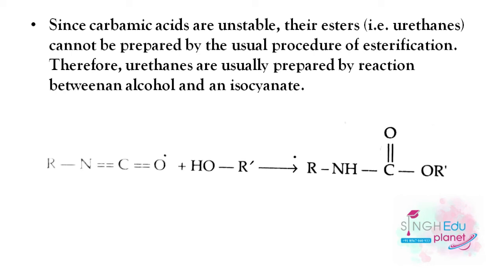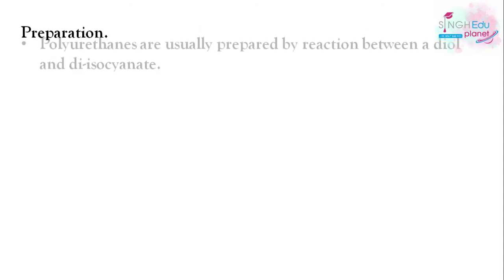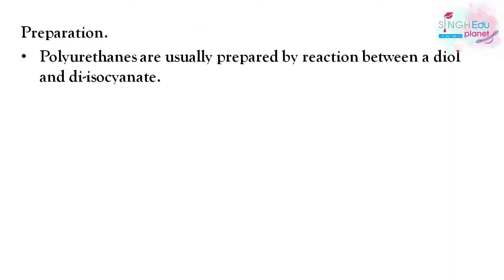Polyurethanes are polymers that contain urethane linkages. They are prepared by the reaction between a diol and a diisocyanate.